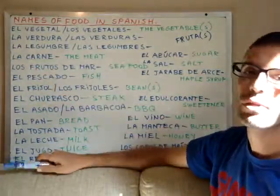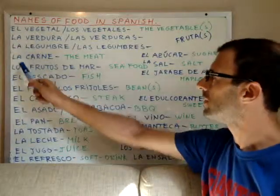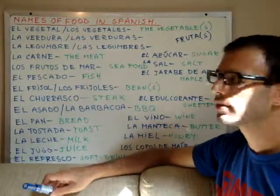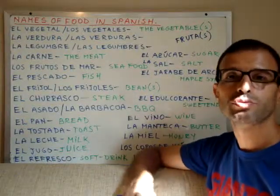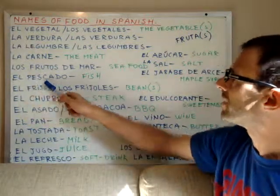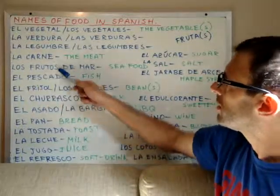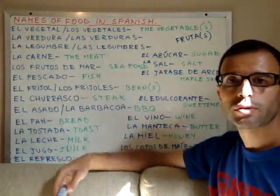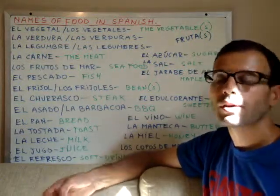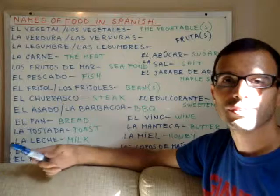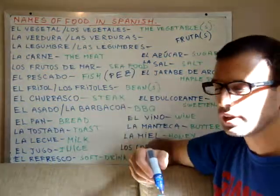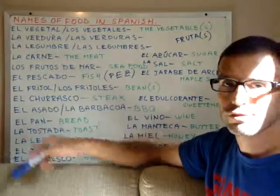Then we have la carne for meat — la carne is feminine. Los frutos de mar means seafood: squid, shrimp, oysters. Then we have el pescado, which means fish — but pescado means fish in the sense of the fish we eat, the dead fish. When we talk about fish that is alive or in the sea, we don't say pescado, we say pez. Pez is the word for fish when it is alive and free; pescado is the word for fish that has already been fished.